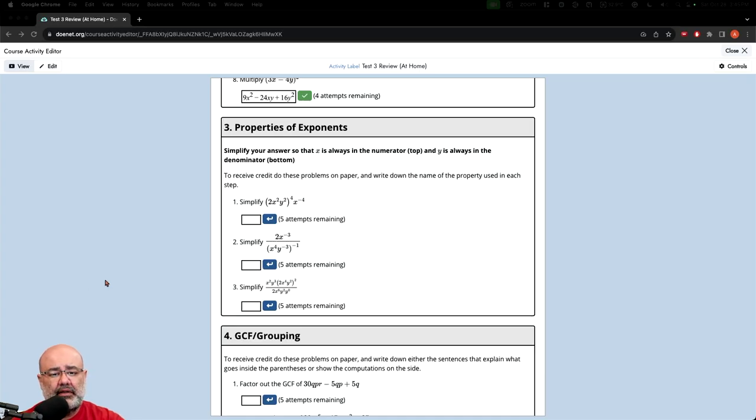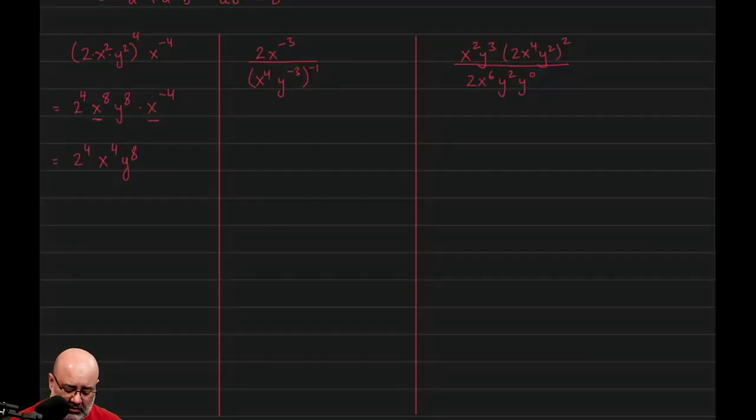And I think the question wanted the answer to be simplified so the x was always in the numerator and the y was always in the denominator. So here, the x is already on top so I don't have to touch it. I have 2 to the 4th, x to the 4th, and I need the y to be in the denominator.